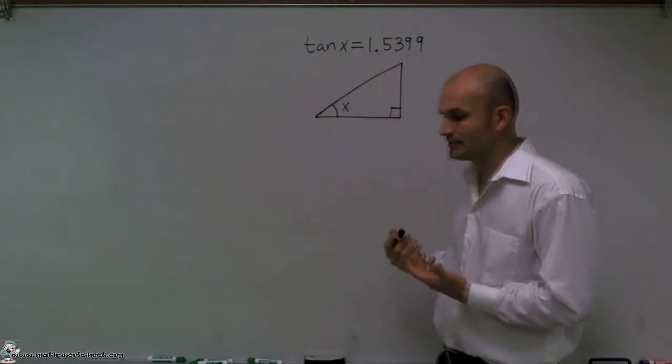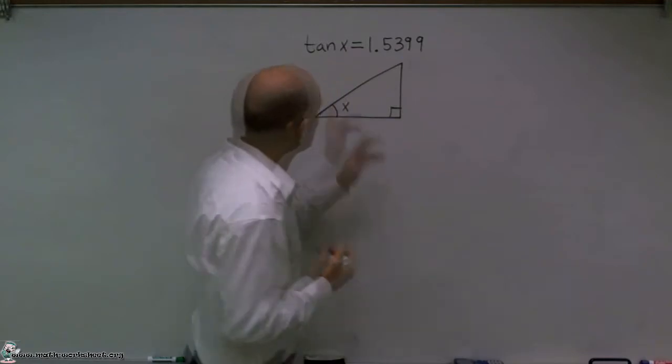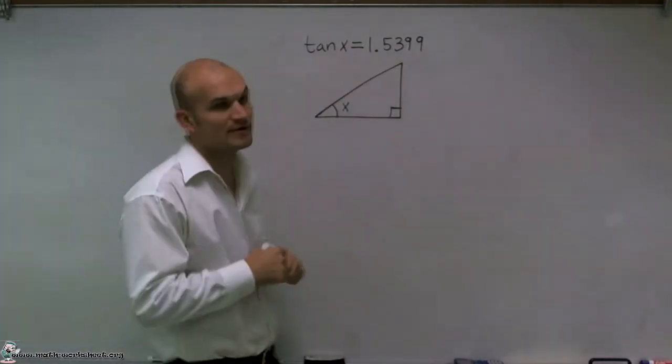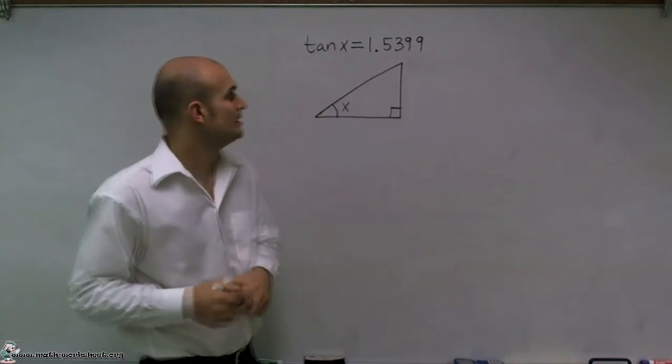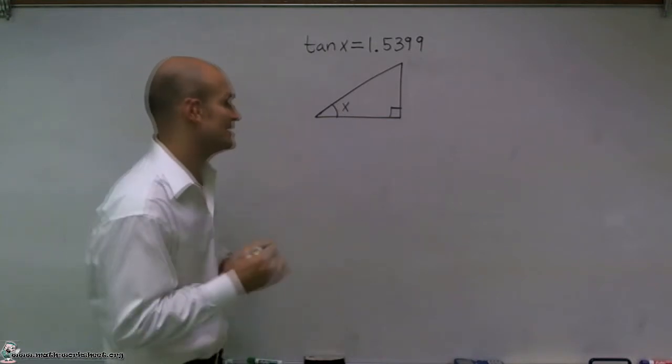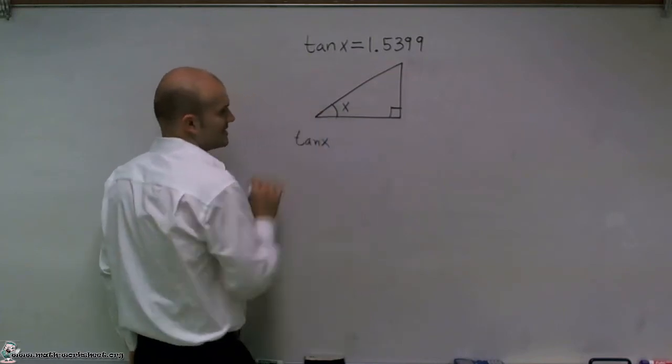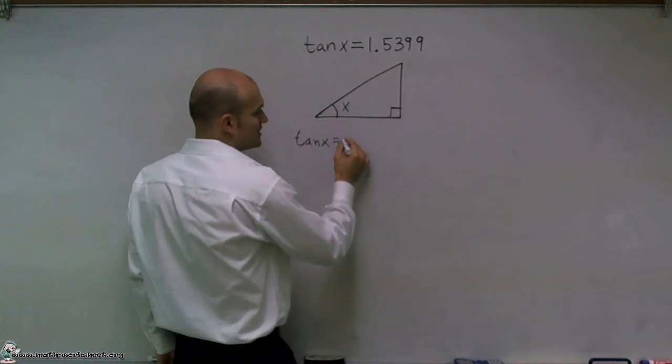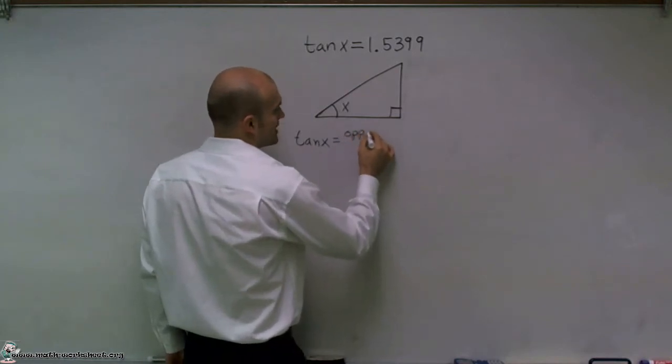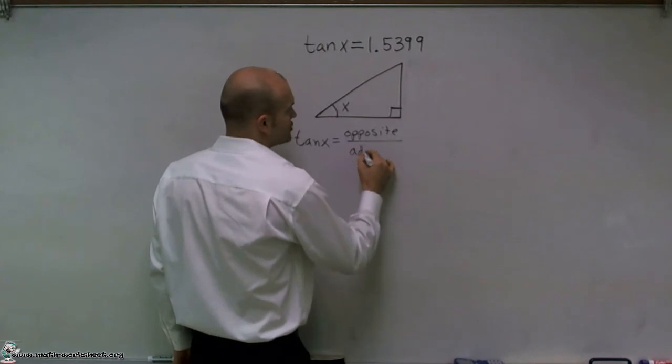Now, the next thing we need to understand is what exactly is the tangent function. Because we have the tangent of x equals 1.5399. Well, where did we get the 1.5399? Well, we need to remember that the tangent of any angle, in this case our angle x, is going to represent a ratio between two side lengths of a triangle. And that is going to be your opposite side length over your adjacent side length.